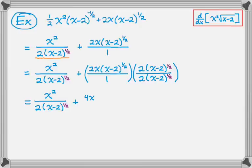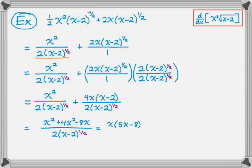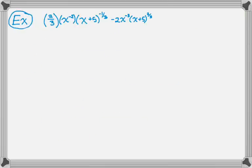Going through the process and multiplying by the common denominator top and bottom: 2x times 2 is 4x, and then the quantity x minus 2 to the 1/2 times x minus 2 to the 1/2 is the quantity x minus 2, all over the common denominator. That gives me x squared plus 4x squared minus 8x, which is 5x squared minus 8x. I can factor out an x, leaving x times the quantity 5x minus 8 over the common denominator. That looks pretty good.